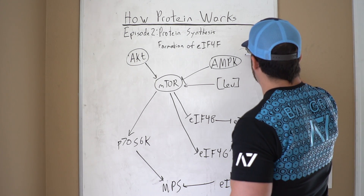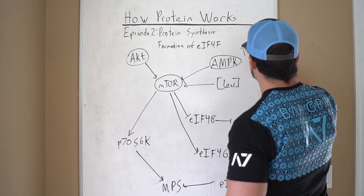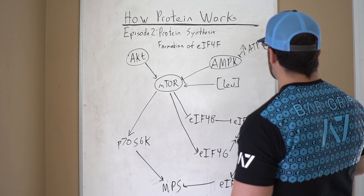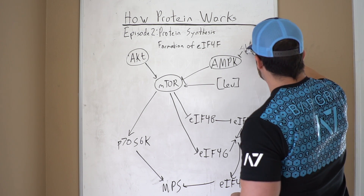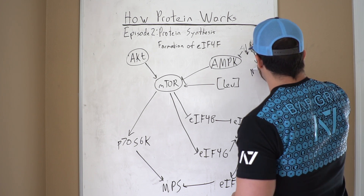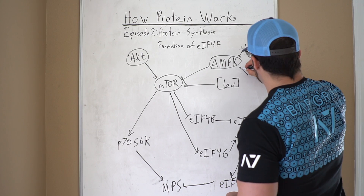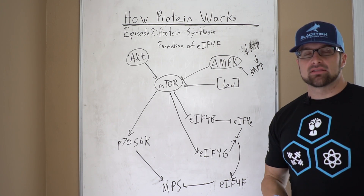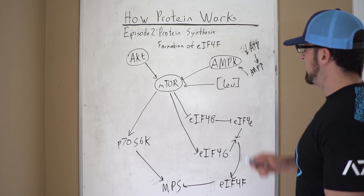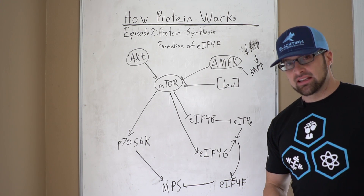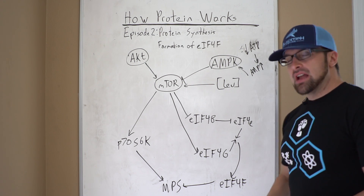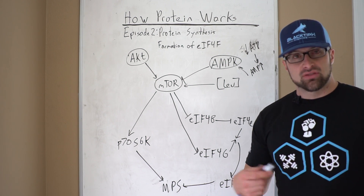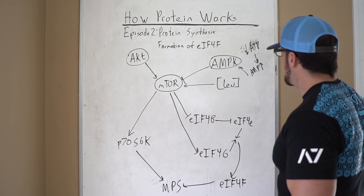For example, if ATP levels go up, that will block AMP kinase, which makes mTOR more active. If ATP levels go down, that means AMP levels go up and increase the activity of AMP kinase, which blocks mTOR. Think about this: if you were in a negative calorie balance, doing a lot of cardio, you didn't have a lot of energy — you would be activating AMP kinase and blocking mTOR. That makes sense because if you were low in energy, you would not want to be wasting energy making new muscle proteins. It's an energetically expensive process. That's one of the reasons a calorie deficit typically is not anabolic.